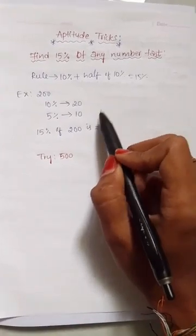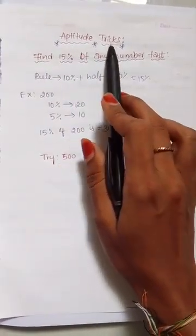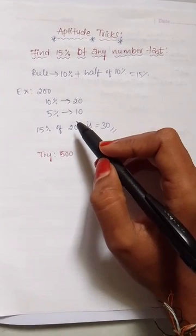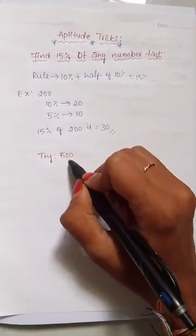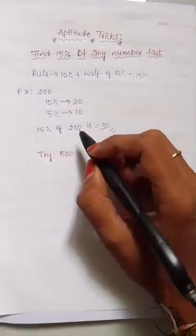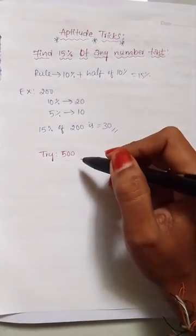Very simple, right? For more simple aptitude tricks, subscribe to my channel and find the 15% of 500 and let me know in the comment section. Thank you.